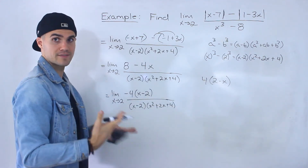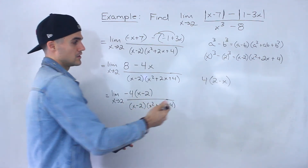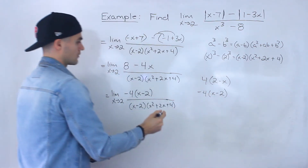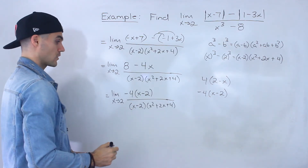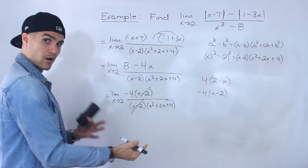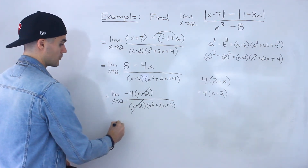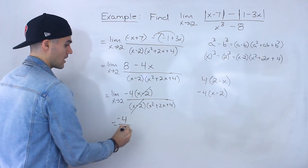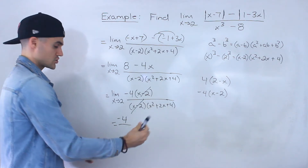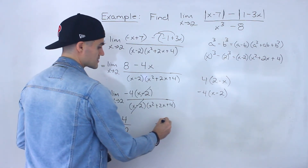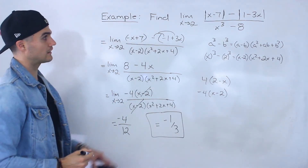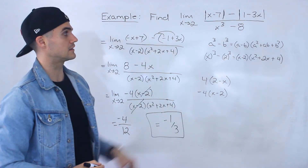Note that 2 minus x and x minus 2 are not the same thing, so we factor out a negative 4 to get negative 4 times (x minus 2). Now the x minus 2 factors cancel, and we can do direct substitution. We get negative 4 over x squared plus 2x plus 4, substituting x equals 2: 4 plus 4 plus 4 equals 12. So negative 4 over 12 simplifies to negative 1 over 3, which is the final answer.